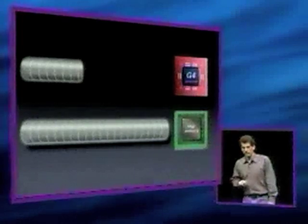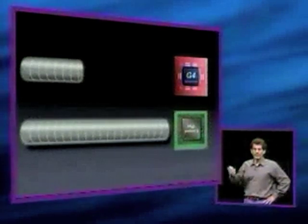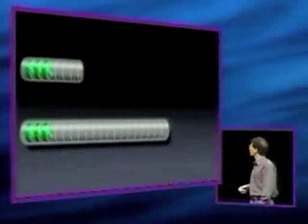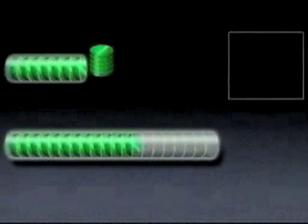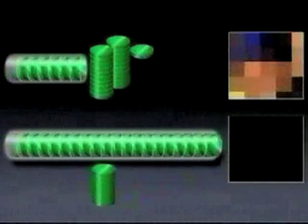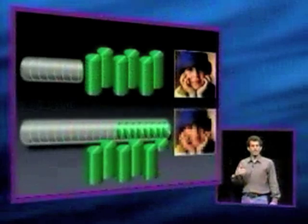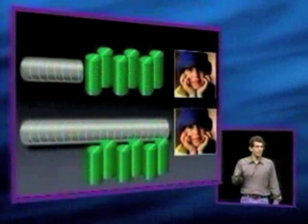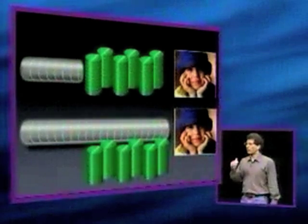We have the seven-stage G4 versus the 20-stage Pentium 4, and we're going to execute equivalent instruction streams down these pipelines. We see instructions flowing down the pipeline, and the short pipeline starts getting results sooner. It takes a while to fill the longer pipeline. So right off the bat, the long pipeline has a disadvantage in that it takes longer time to fill. Every cycle we're executing one instruction and completing it. You might think the longer pipeline running twice as fast will eventually catch up — and that would be true in the ideal case — but it's not a perfect world, and there are inefficiencies associated with long pipelines.